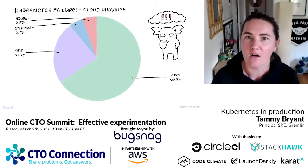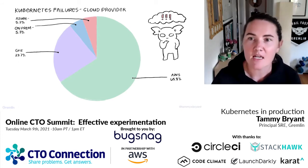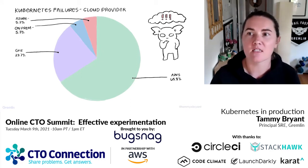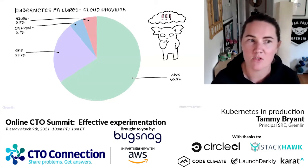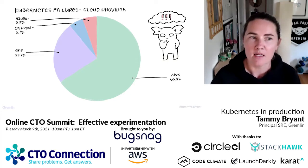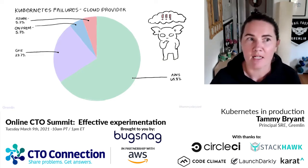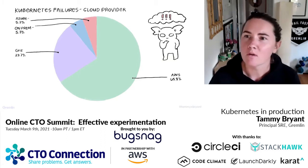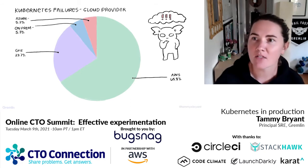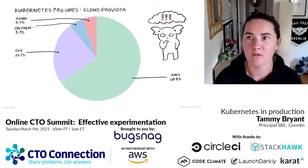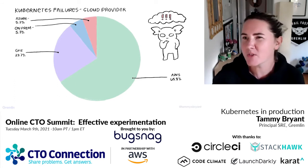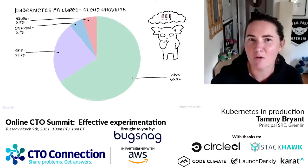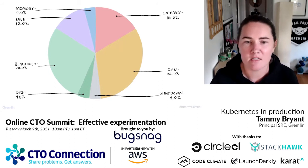When we look at different cloud providers and how many outages were reported, the majority were actually reported related to AWS. This makes sense because most people run Kubernetes on AWS. The next most common is GKE — Google's platform — then Azure with AKS, and some folks running Kubernetes from scratch. AWS also has its managed service called EKS. This is pretty much what we'd expect if we hypothesized which cloud provider would have the most reported outages.